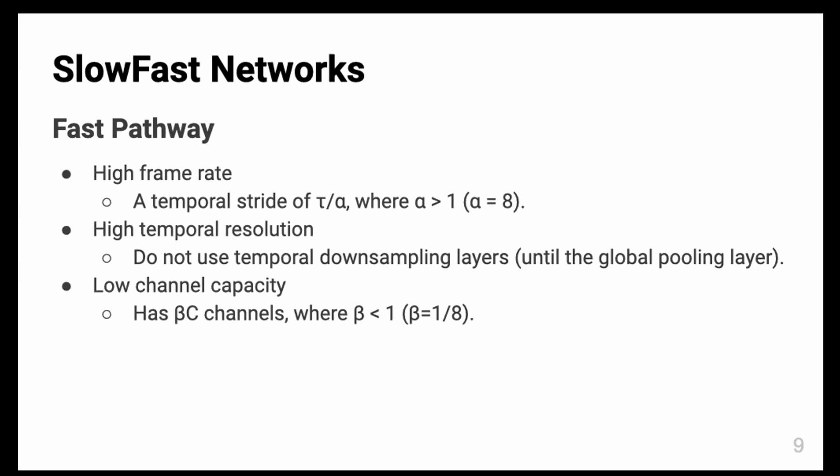When we say τ is the temporal stride of the slow pathway, the fast pathway has much smaller stride than the slow pathway. For high temporal resolution, they do not use temporal downsampling layers. They use the whole frames they get as inputs. They also have low channel capacity.